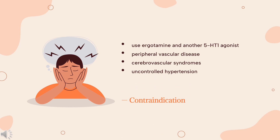Contraindications: Sumatriptan is contraindicated in patients who use ergotamine and another 5-HT1 agonist concurrently. Patients with peripheral vascular disease, ischemic bowel disease, cerebrovascular syndromes, or uncontrolled hypertension have a contraindication to sumatriptan.